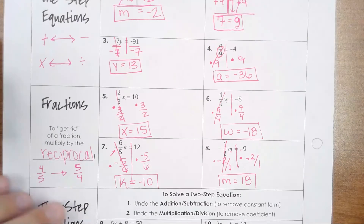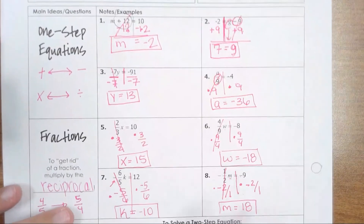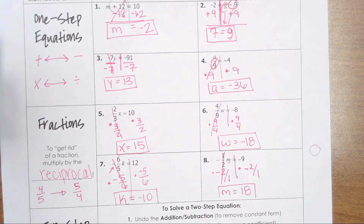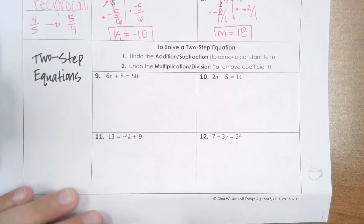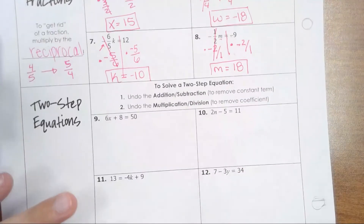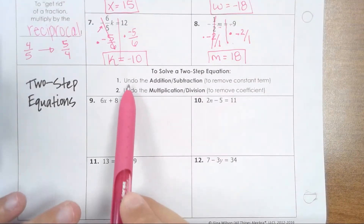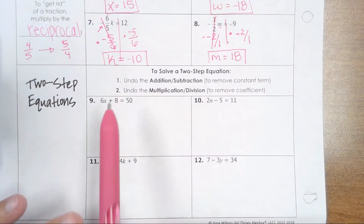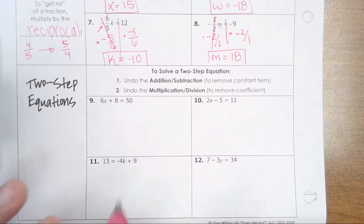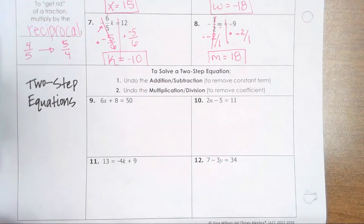These are what we call one-step equations, because we only did one step to get our final answer. We also have something called two-step equations. Instead of doing one step, we now are going to have two steps to solve these equations. Once again, you're always trying to get the variable by itself, and wherever the variable is, you need to move all other numbers on that same side over to the other side of the equal sign.